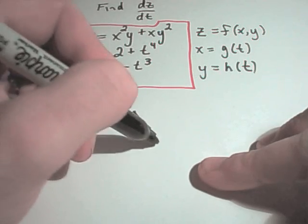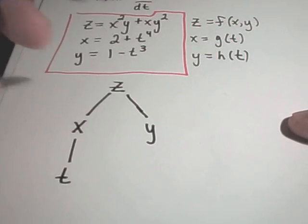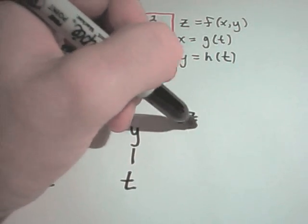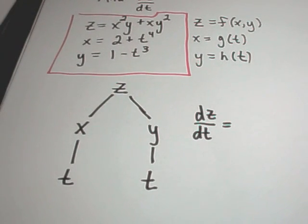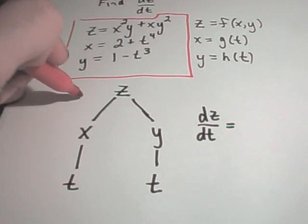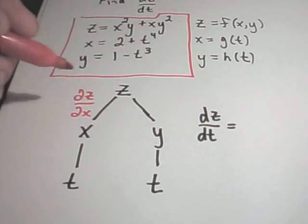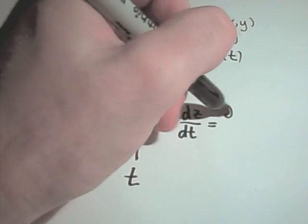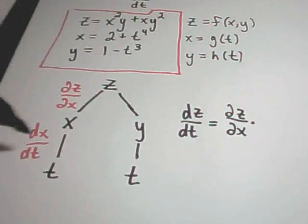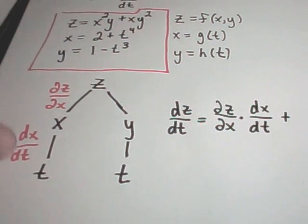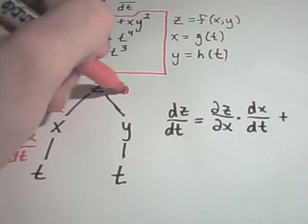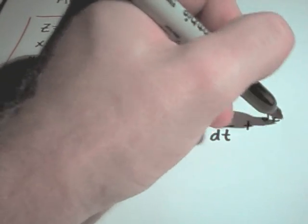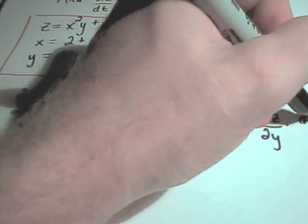So z depends on x and z depends on y, and each of those — x depends on t and y also depends on t. If you want to find the derivative of z with respect to t, what you do is you basically go down each branch. This first branch corresponds to finding the partial of z with respect to x, and the last branch corresponds to finding the derivative of x with respect to t. We multiply those two things together, then add on to that the other branch: the partial of z with respect to y times the derivative of y with respect to t.